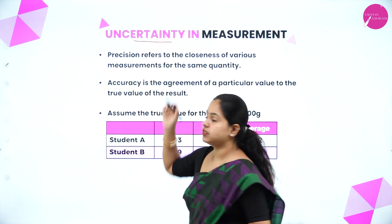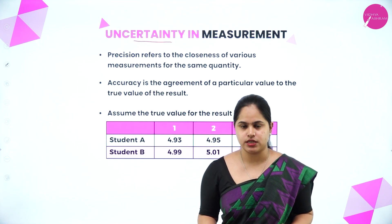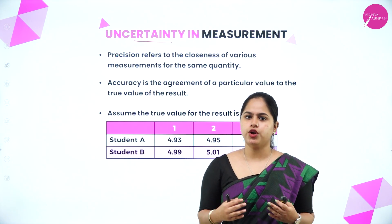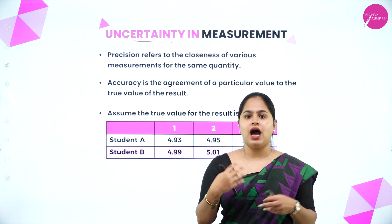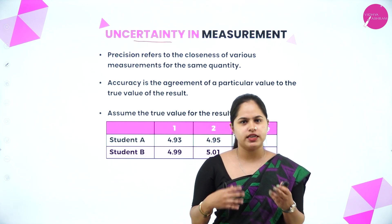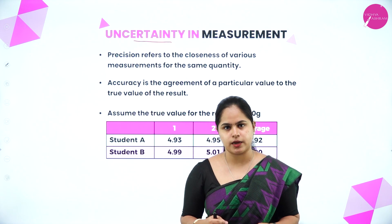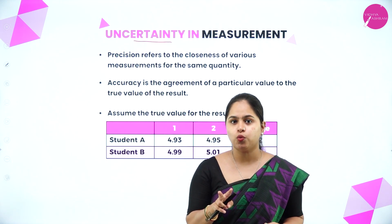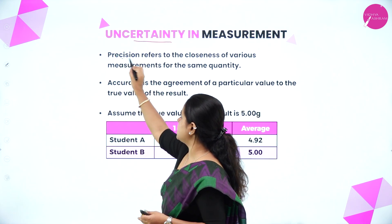So what does the word 'uncertainty' mean? In the study of chemistry we often come across experimental data and its calculations. If you want to calculate the length of any substance, you don't just take one reading — you take three or four or more readings and then calculate the average. The mean value will be more accurate than the individual ones. There will always be a chance of errors or uncertainties in your measurement, which is why we take multiple values and find the average. In the case of uncertainty in measurements, two words often used — and which might be a little confusing — are precision and accuracy.